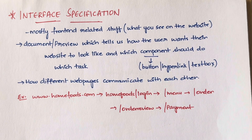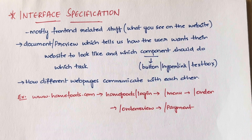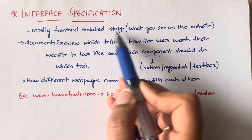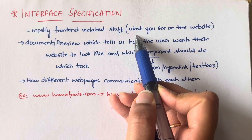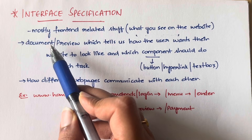Now let's see what interface specification is. Let's say you are visiting a website — www.google.com. What you will see is the Google logo, a search bar, some services at the top, and some cookie information at the bottom. Basically, what you see on the front end of the website is called the interface. On that interface you click buttons and navigate through pages. So the front-end related part of an application or website is called the interface.